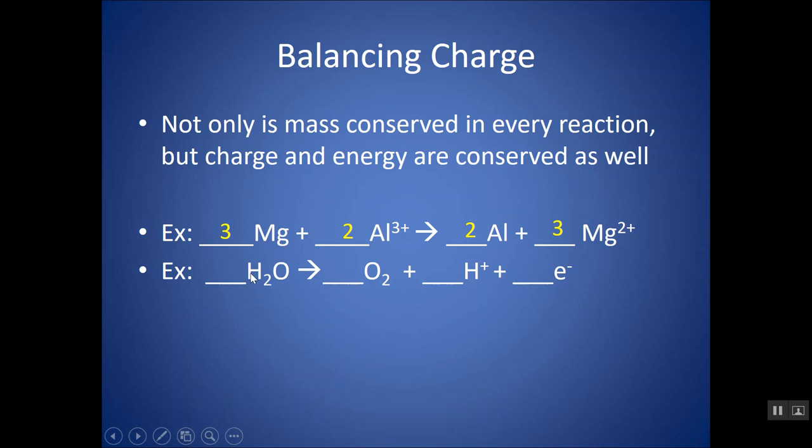Same thing over here. I can balance the mass first or atoms. There's two oxygens on this side, so I put two here. Now there's four hydrogens on this side, so I put a four here. But now my charge is also not balanced. There's four H pluses, so that's four plus, and a one minus brings me three plus total on the right and zero on the left.